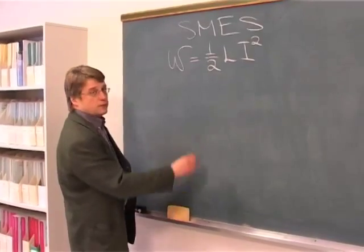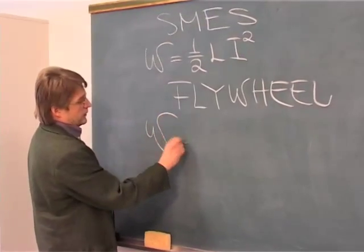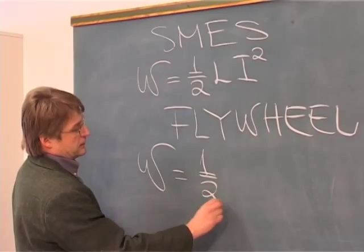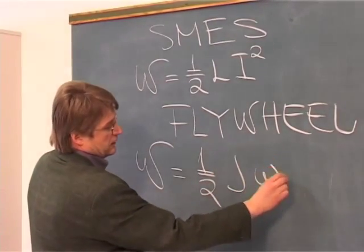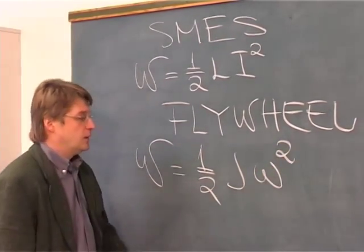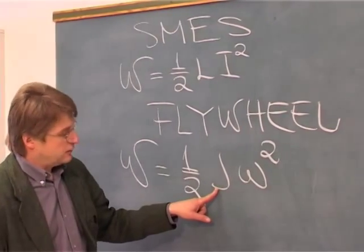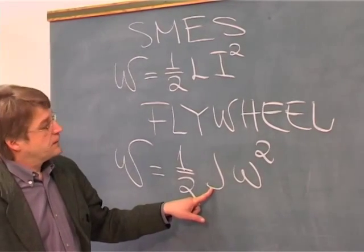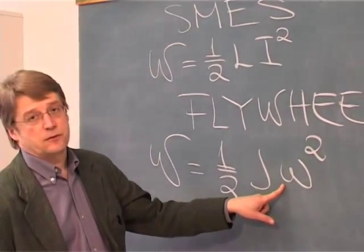Related to flywheel, energy can be stored as 0.5 times J times omega squared, where J is the momentum of inertia and omega represents the angular frequency.